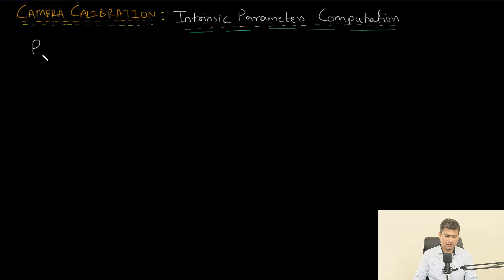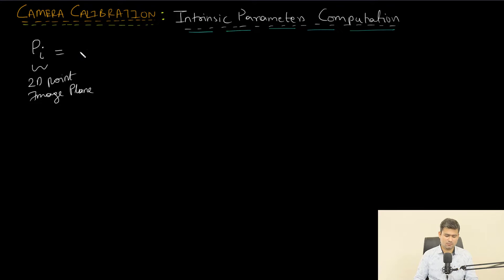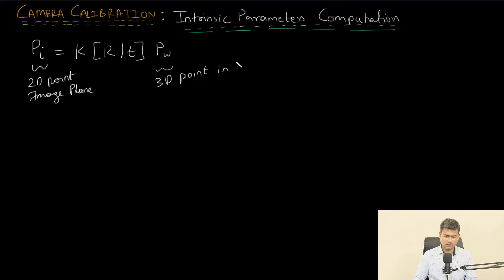In the previous lecture we learned what the camera intrinsic and extrinsic parameters are. For completeness, PI is a 2D point in the image plane, which is a transformation of a 3D point in the world coordinate system obtained by the following projection model: PI equals K times RT times Pw, where Pw is a 3D point in the world coordinate system.